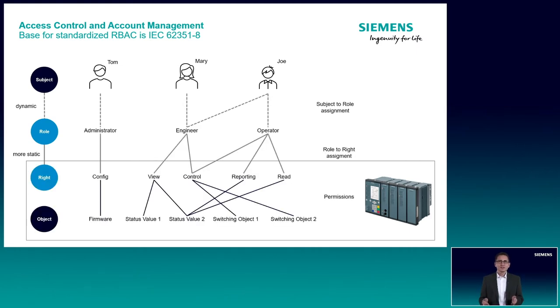Each role is granted specific rights on specific objects in the target device, and this role-to-right assignment is static and is implemented inside the IED. Let's look at the example. User Tom has the job role administrator, which grants him the right to configure the firmware in the IED. This allows him, for example, to install a new firmware version on the IED.